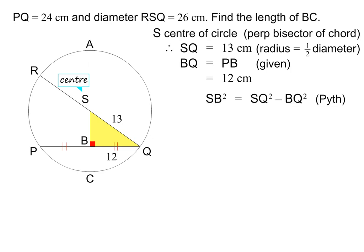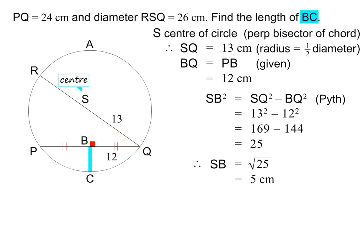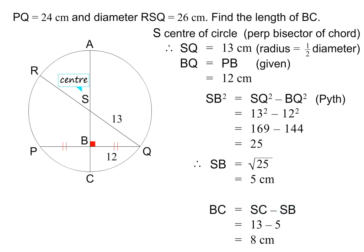In other words, SB squared is equal to SQ squared minus BQ squared. This is equal to 13 squared minus 12 squared, which is equal to 25. SB is therefore equal to 5 cm. We were asked to find the length of BC. BC is equal to SC minus SB. SC is equal to 13 because it is a radius, and SB we have just calculated to be 5. BC is therefore equal to 8 cm.